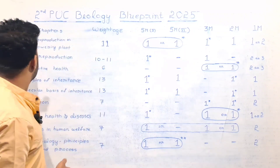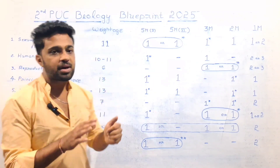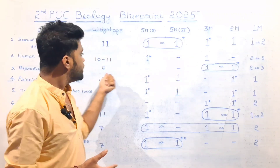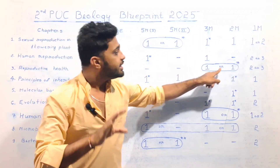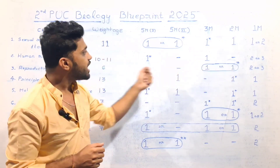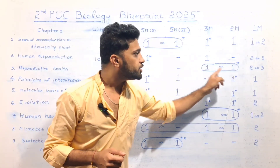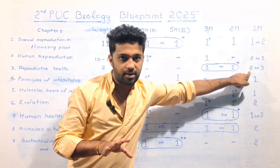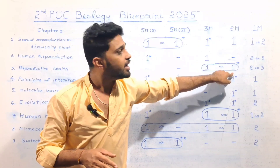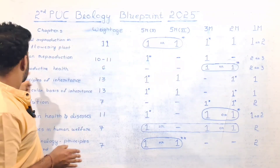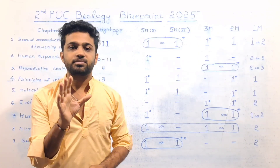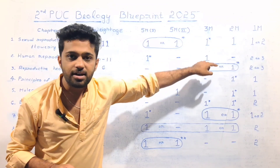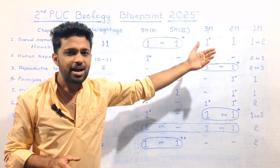The next chapter is Reproductive Health. This chapter is allotted 6 marks. You can understand — five marks on the question. This chapter is Reproductive Health. Three marks on the question, two marks on the question, one mark on the question. MCQ and fill-in-the-blank are one mark. This chapter is going to help. If you skip this chapter, you can skip the short answer related questions. If you have a few marks, you can ignore it.